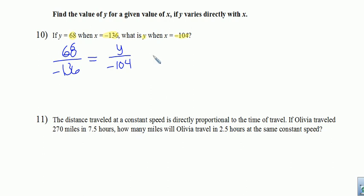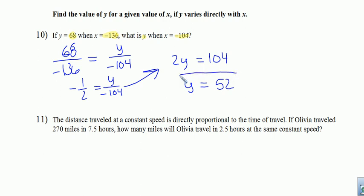Let's go ahead and cross-multiply. Actually, let's reduce the 68 and the 136 and get those numbers knocked down. What do you know? That's one-half. Negative one-half in this case. Negative one-half is equal to y over negative 104. Now, let's go ahead and cross-multiply. So if we take y times 2, we get 2y. If we take negative 1 times negative 104, we get 104. And dividing by 2, y is the same as 52. So we've got an answer for 10.